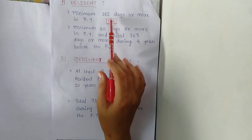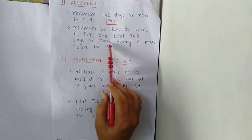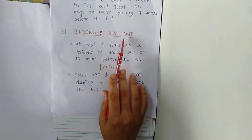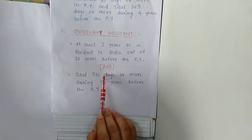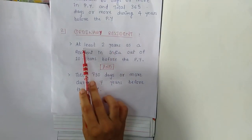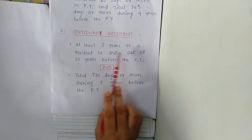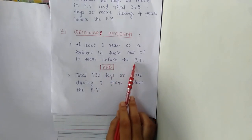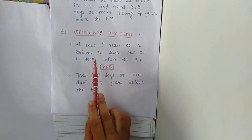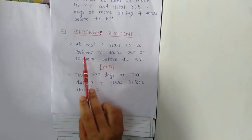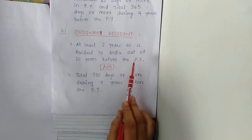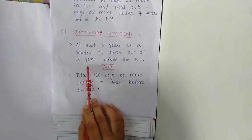The second status is ordinary resident. In case of ordinary resident, the first condition is at least two years as a resident in India out of ten years before the previous year. That means the assessee should have remained as a resident in India for at least two out of the ten years preceding the previous year.